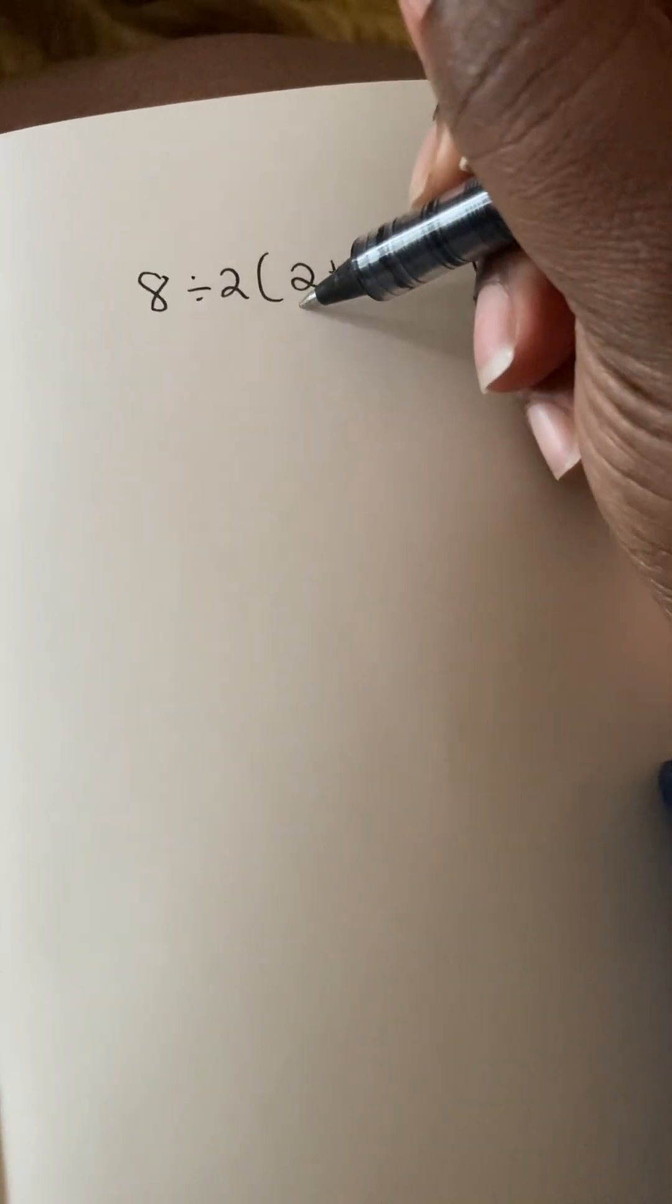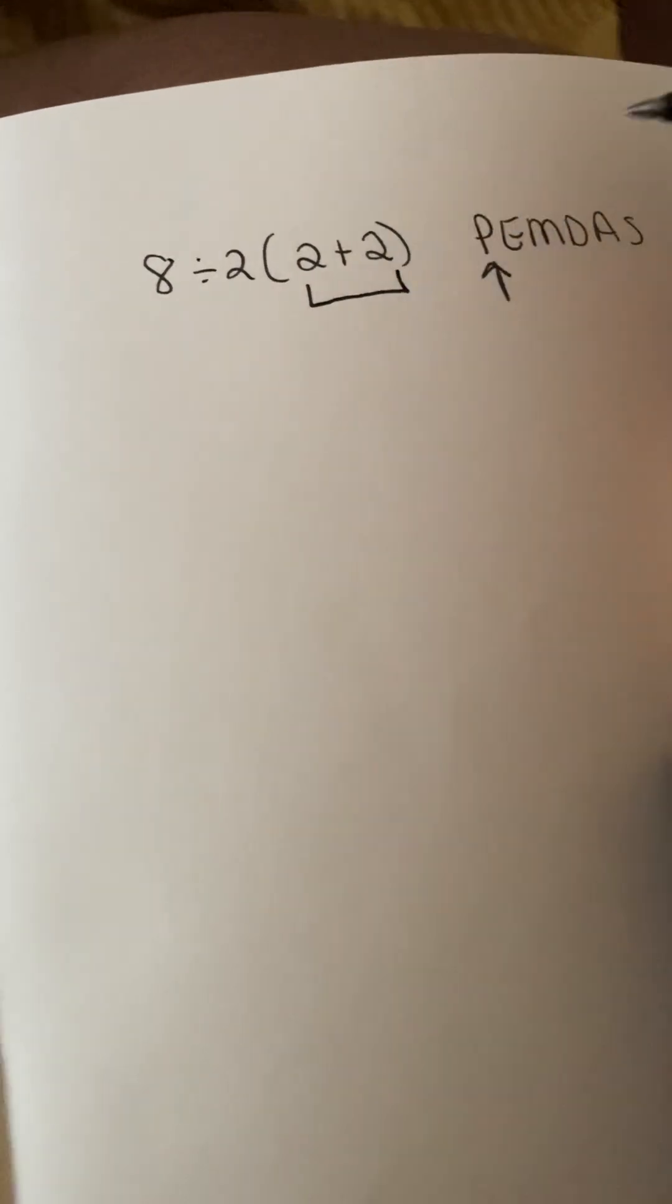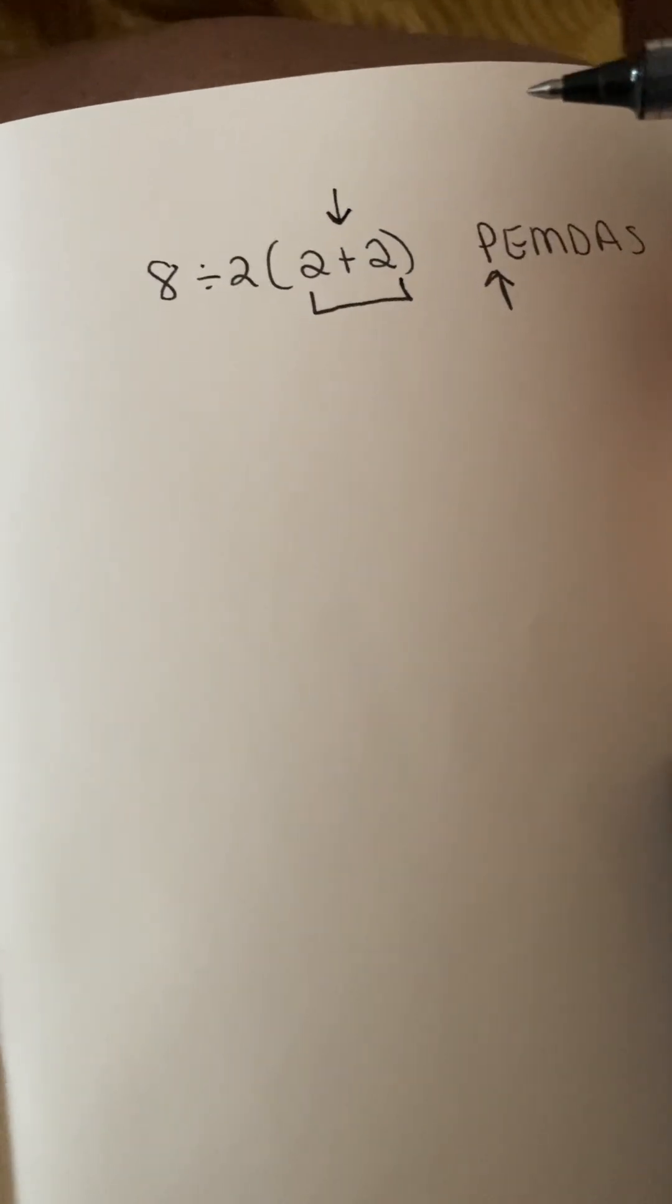So parentheses means do whatever is inside of the parentheses only if there's an action. Anytime you see a sign in between two numbers, that's the action. So 2 plus 2, the action is adding.